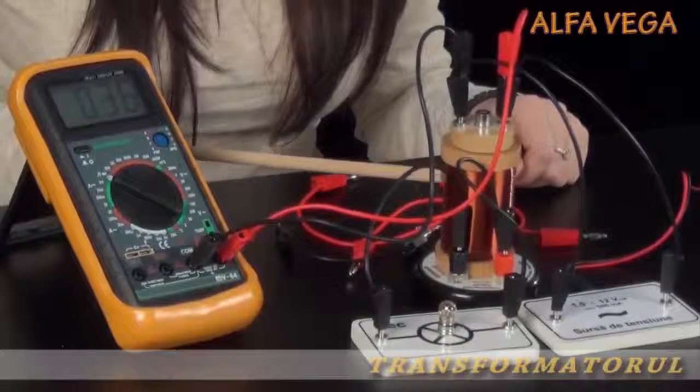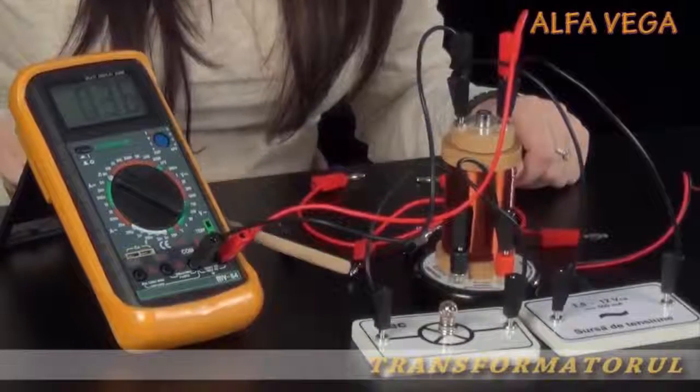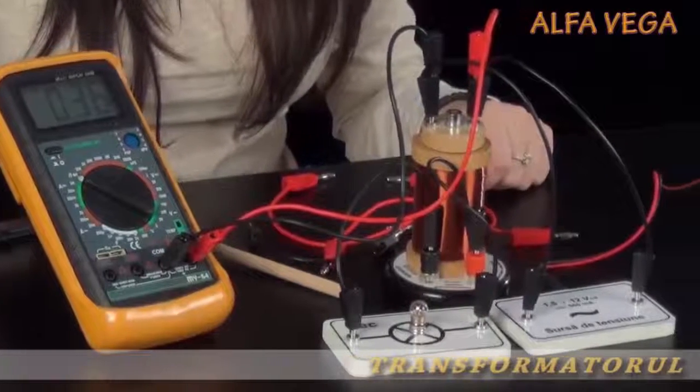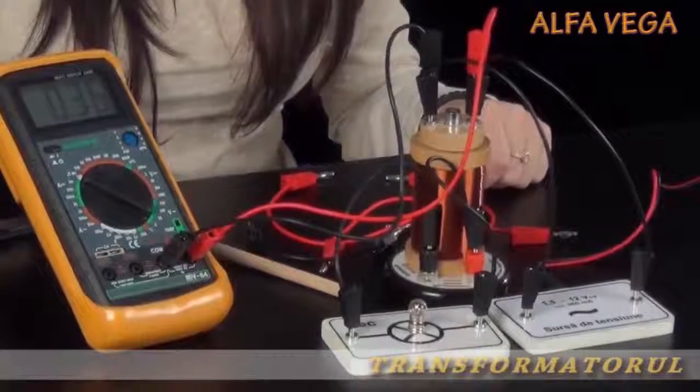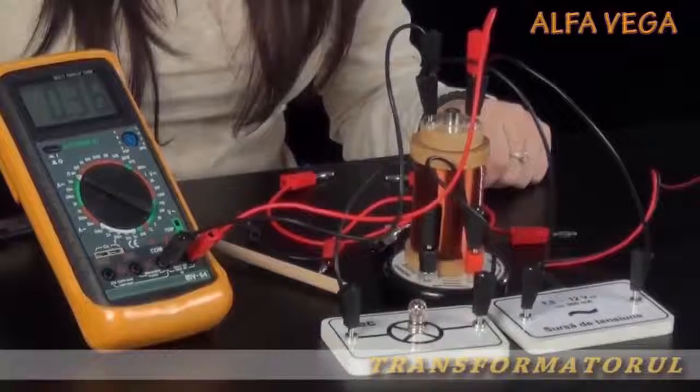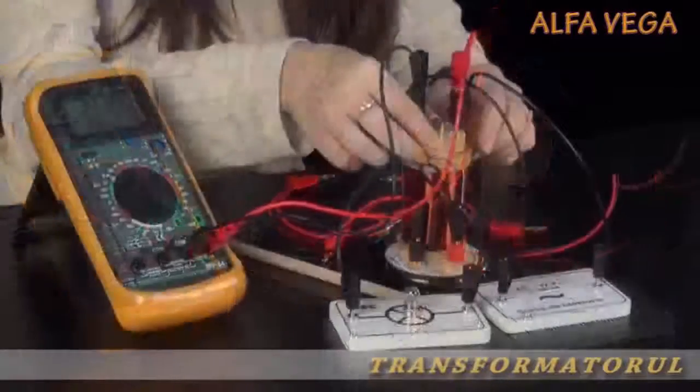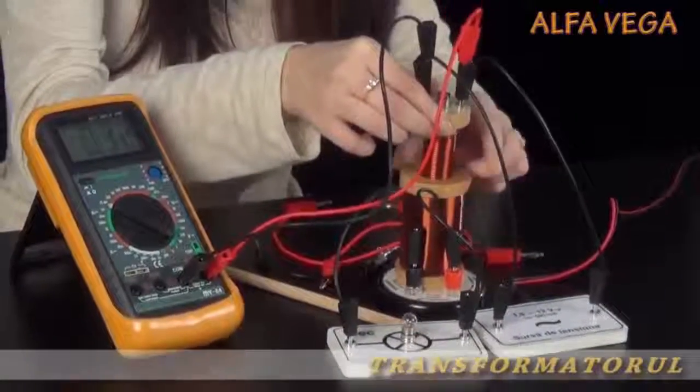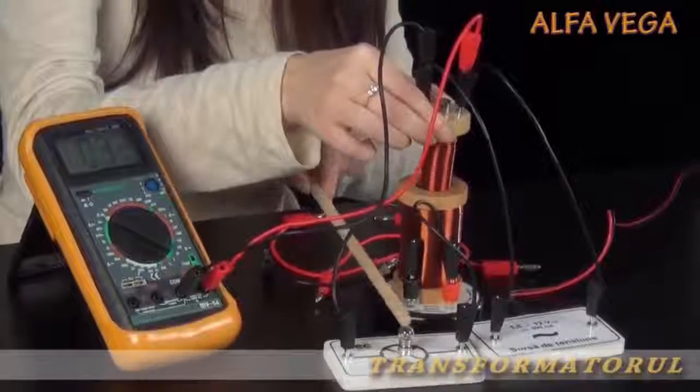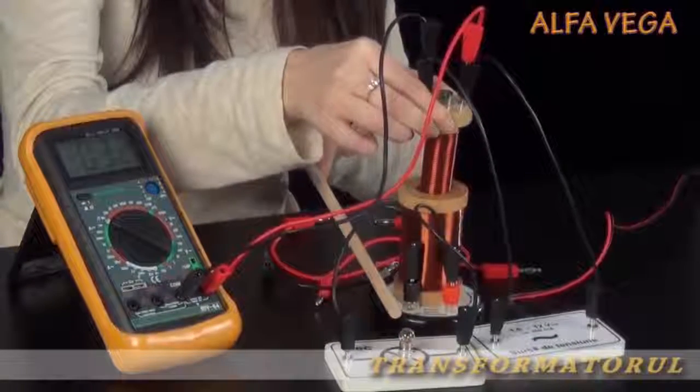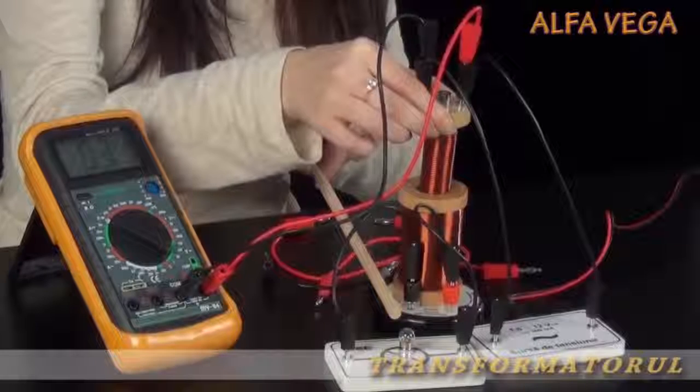Se trag concluzii. Observăm că la numărul mai mare de spire și tensiunea este mai mare. Tensiunea fiind proporțională cu numărul de spire. Pe măsura scoaterii bobinei interioare scade intensitatea cuplajului inductiv. Becul va lumina din ce în ce mai slab pe măsura scoaterii.